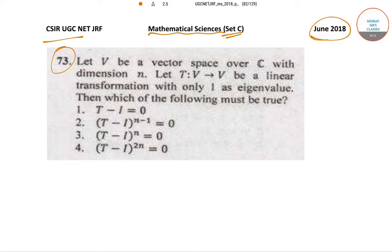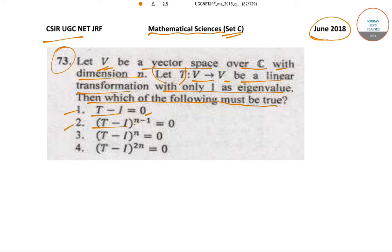In question number 73, it has been said that let V be a vector space over C with dimension n. Now if T, which goes from V to V, is a linear transformation with only 1 as its eigenvalue, which of the following must be true? Option 1: T minus I equals 0. Option 2: (T minus I)^(n-1) equals 0. Option 3: (T minus I)^n equals 0. Option 4: (T minus I)^(2n) equals 0.